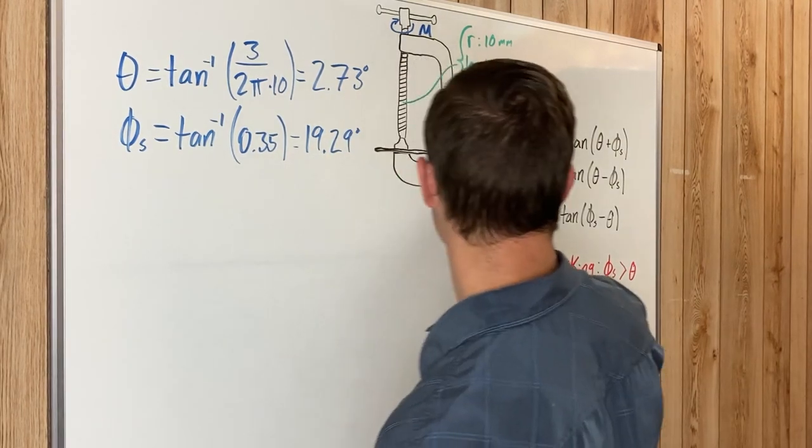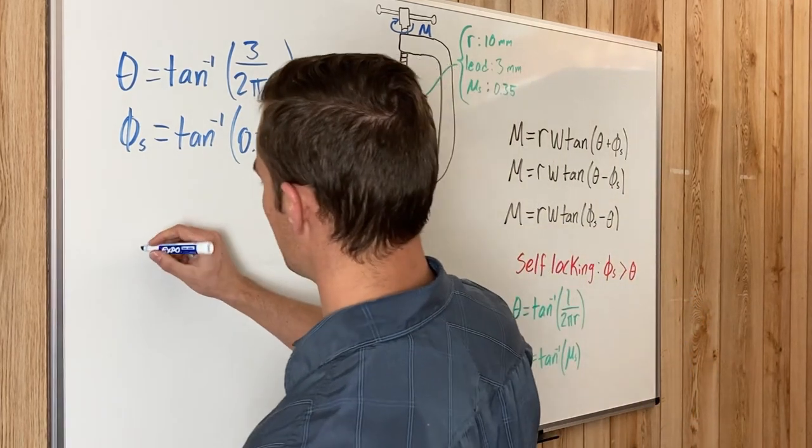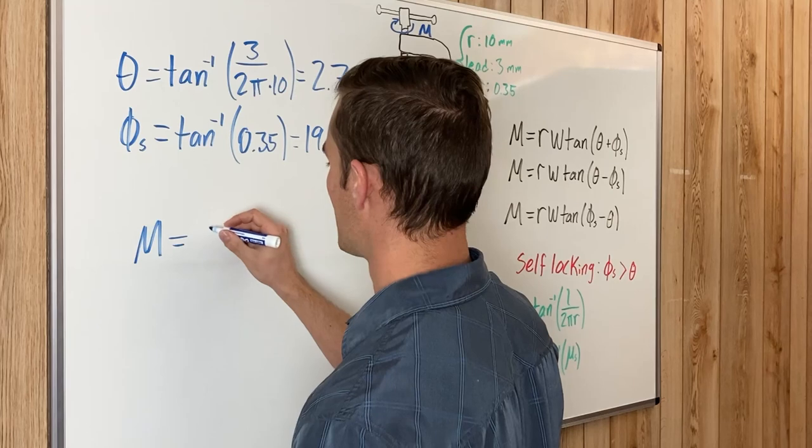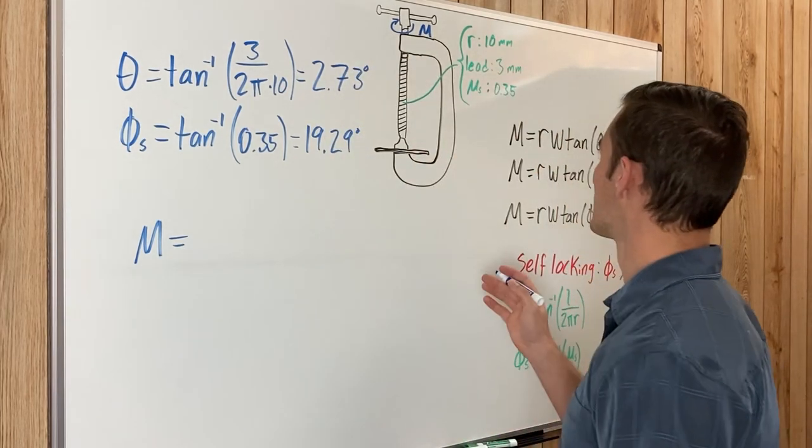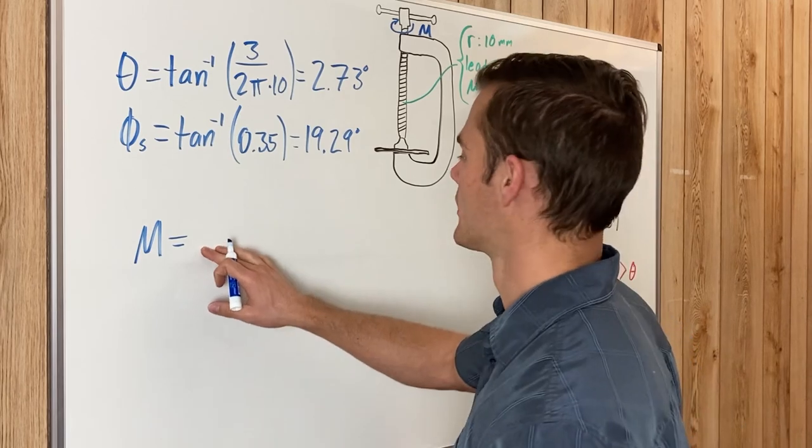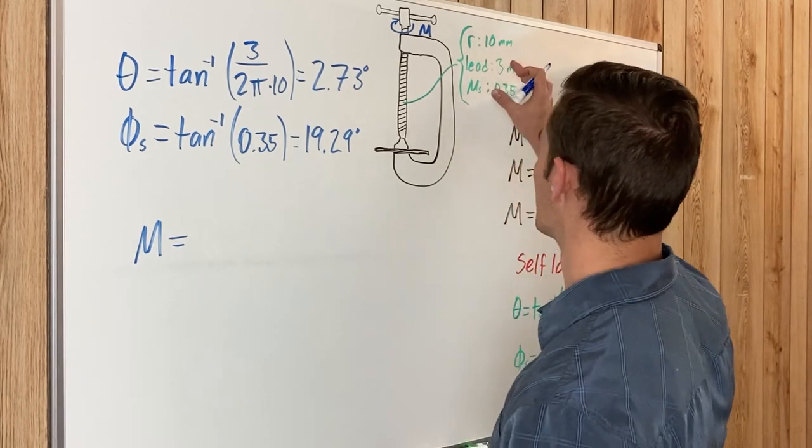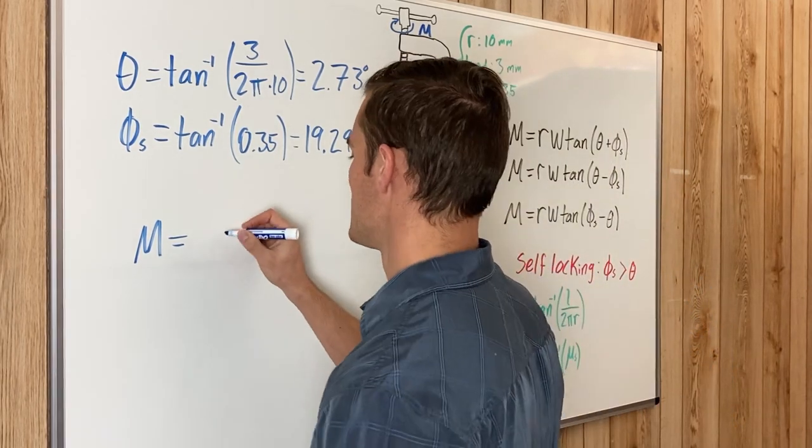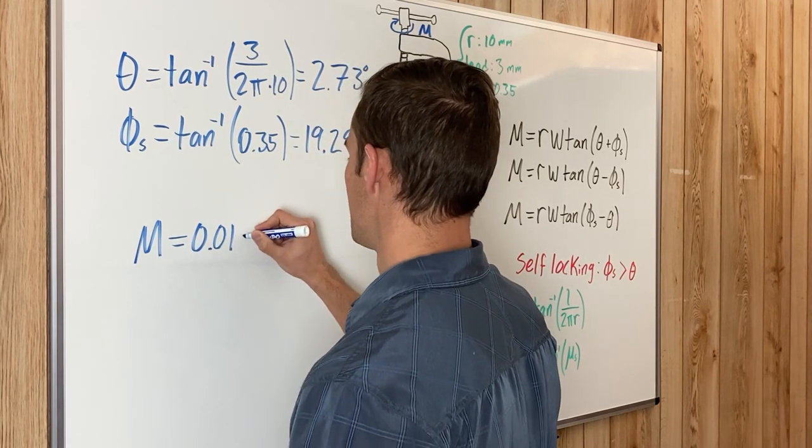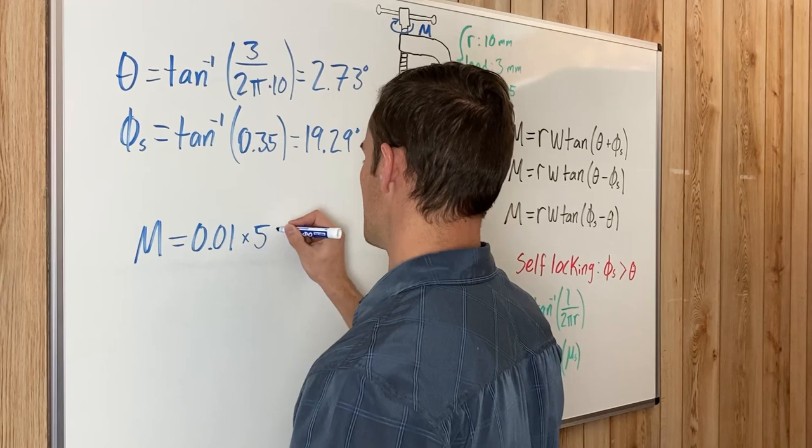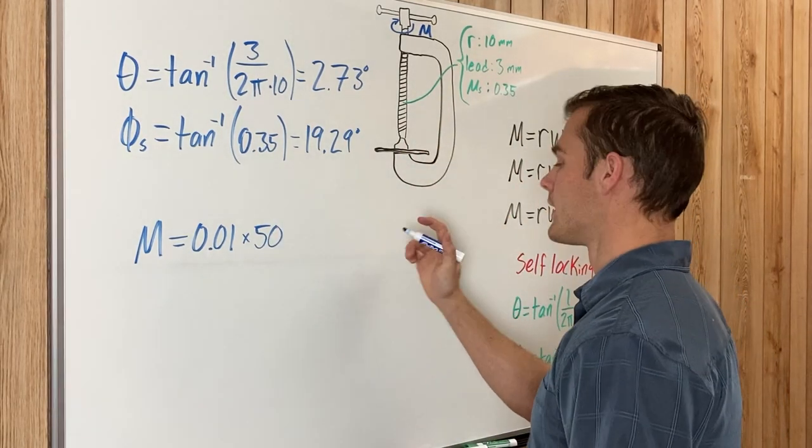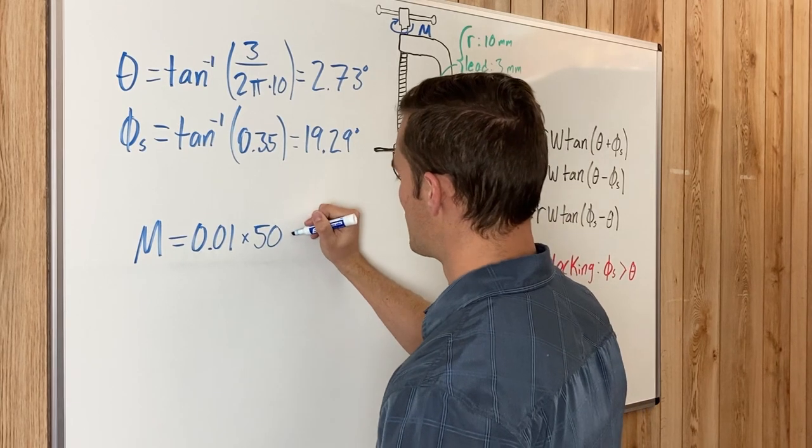So plugging in what we know to this equation, M equals r. In order to get our answer in newton-meters, we'll need to change r into meters, which ends up being 0.01 meters, and multiply it by W, which is 50, because that is the compression force needed.